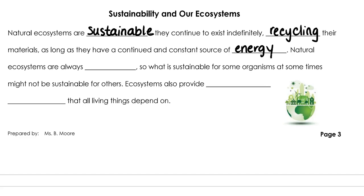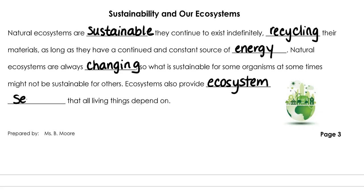Natural ecosystems are always changing — that's how they survive. What is sustainable for some organisms at some times in Earth's history might not be sustainable at other points. Ecosystems also provide what we call ecosystem services, which sustain those ecosystems, including us. All living things depend on ecosystem services.